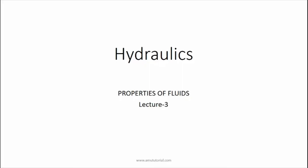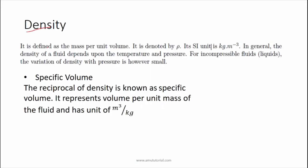Today I am going to discuss properties of fluids. Density is defined as the mass per unit volume, denoted by the Greek symbol rho. So density rho is equal to mass per unit volume. The SI unit of density is kg per meter cube, and the dimensions for density are M L minus 3.